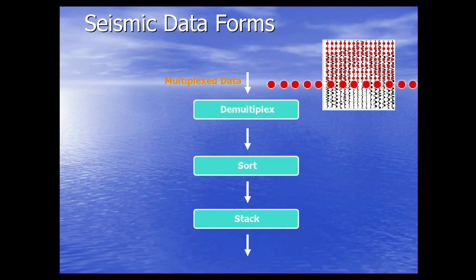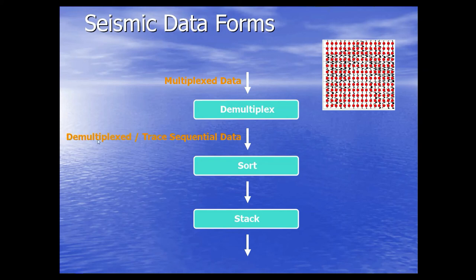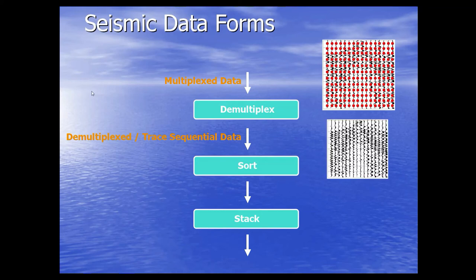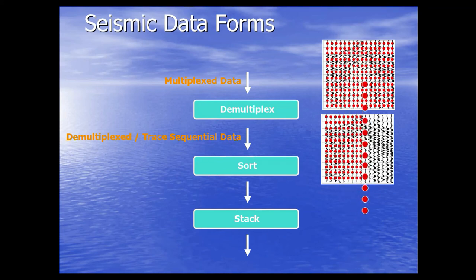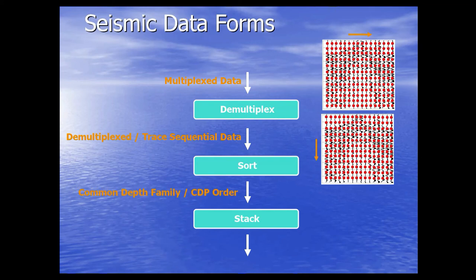In multiplexed form, all data points are assigned by source and receiver. Demultiplexing changes the data from shot sequential into trace sequential data — essentially taking the transpose of the data matrix, where one axis is distance and the other is time.